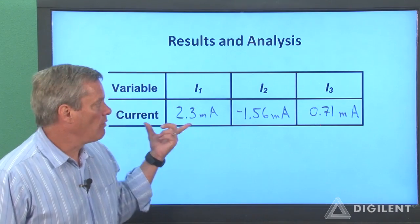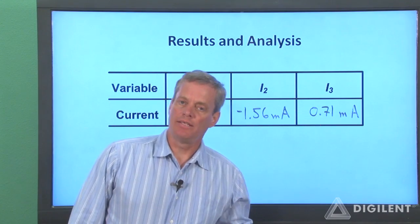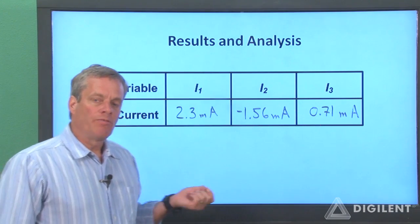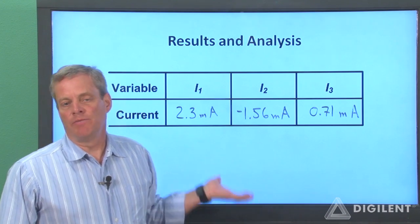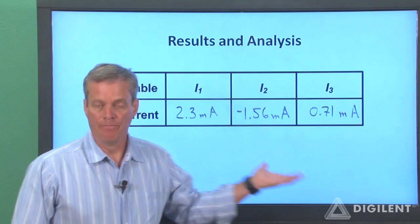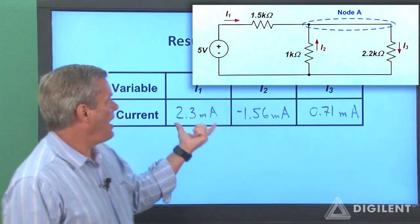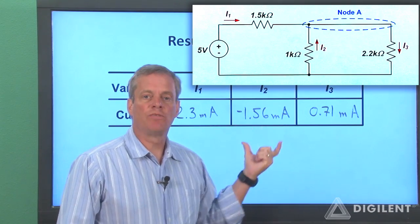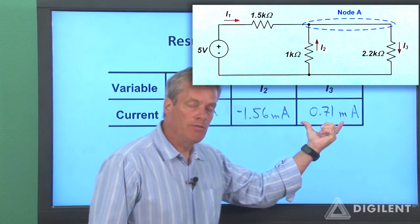Here's our measured data. We want to use this data to verify KCL. The form of KCL that I'm going to use is that the sum of the currents entering the node is equal to the sum of the currents leaving the node. On our previous schematic, I1 and I2 were assumed to be entering the node. I3 was assumed to be leaving.